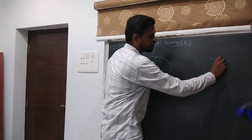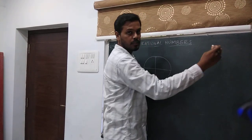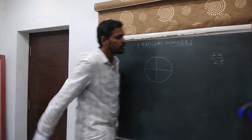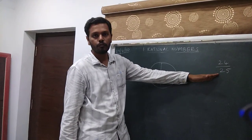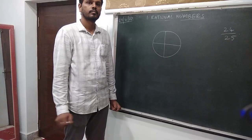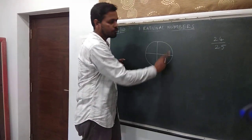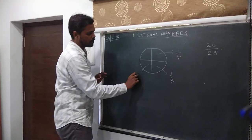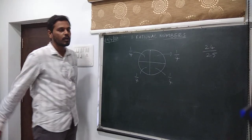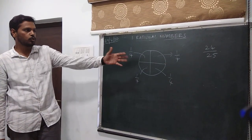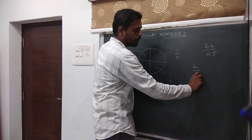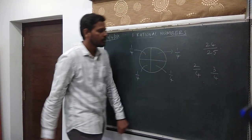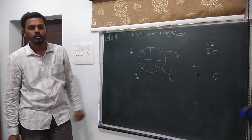Suppose there is an exam for 25 marks and you scored 24. Then we write that as 24 out of 25 — you have scored 24 marks out of 25. Just like that, this is 1 part out of 4 parts, so we represent it as 1 by 4. At the end of the second day you might have consumed 2 parts, that is 2 parts out of 4 parts. End of the third day, 3 parts out of 4 parts.